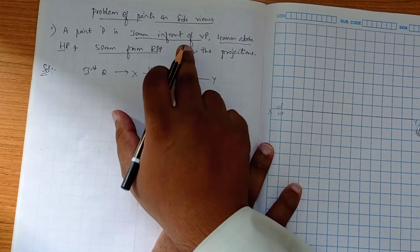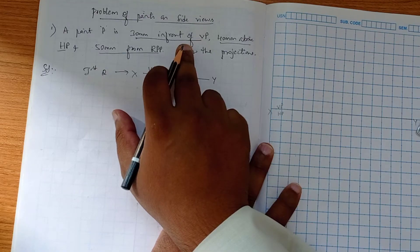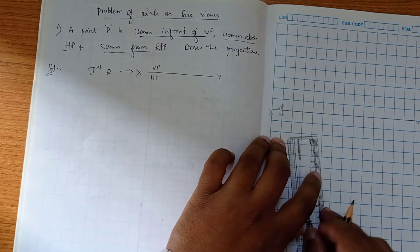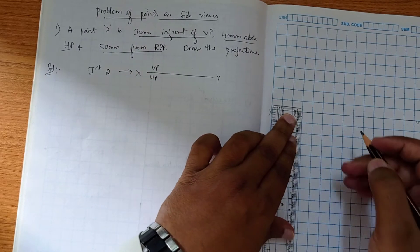We know that 30mm in front of VP means it is the top view. Top view is drawn in the HP plane. 30mm means three boxes, and you put a point. That is your top view.